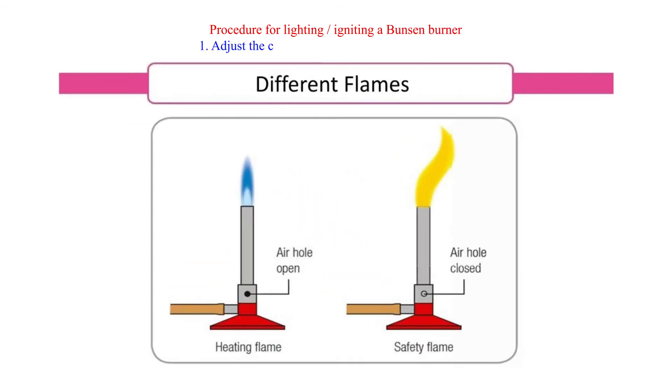Procedure for lighting or igniting a Bunsen burner. 1. Adjust the collar to ensure the air holes are closed.